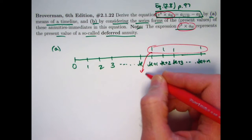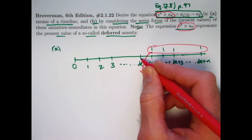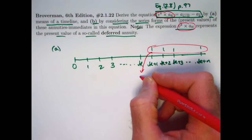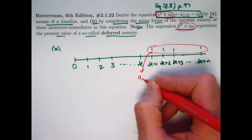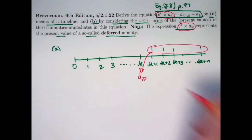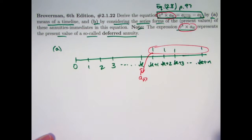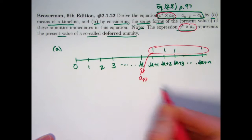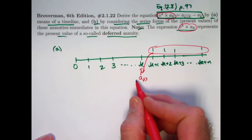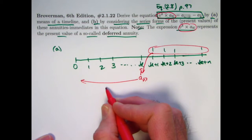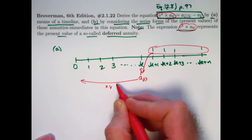Since it's N payments, and since we're evaluating the value of this one year before the first payment, this symbol A sub N at this moment in time, time K, does represent the present value of that at that moment. So therefore, to get back to time zero, I need to discount by multiplying by V to the K power.